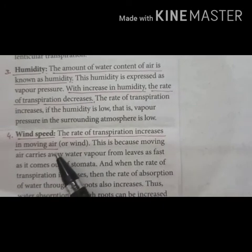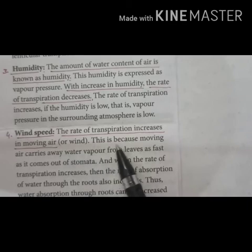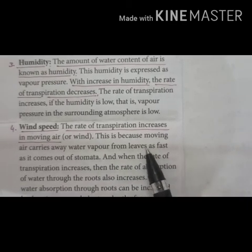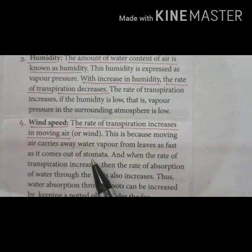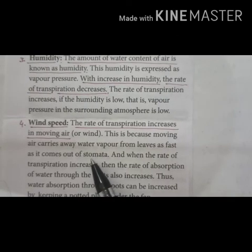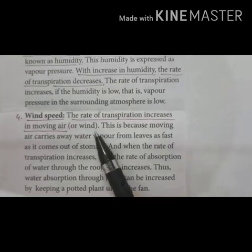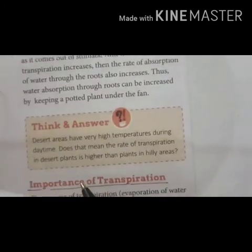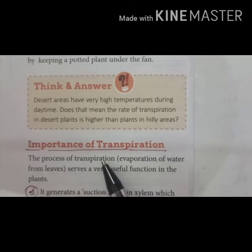Next is wind speed. The rate of transpiration increases in moving air, because moving air carries away water vapors from the leaves as fast as they come out of the stomata. So these are the four main factors which affect the rate of transpiration.